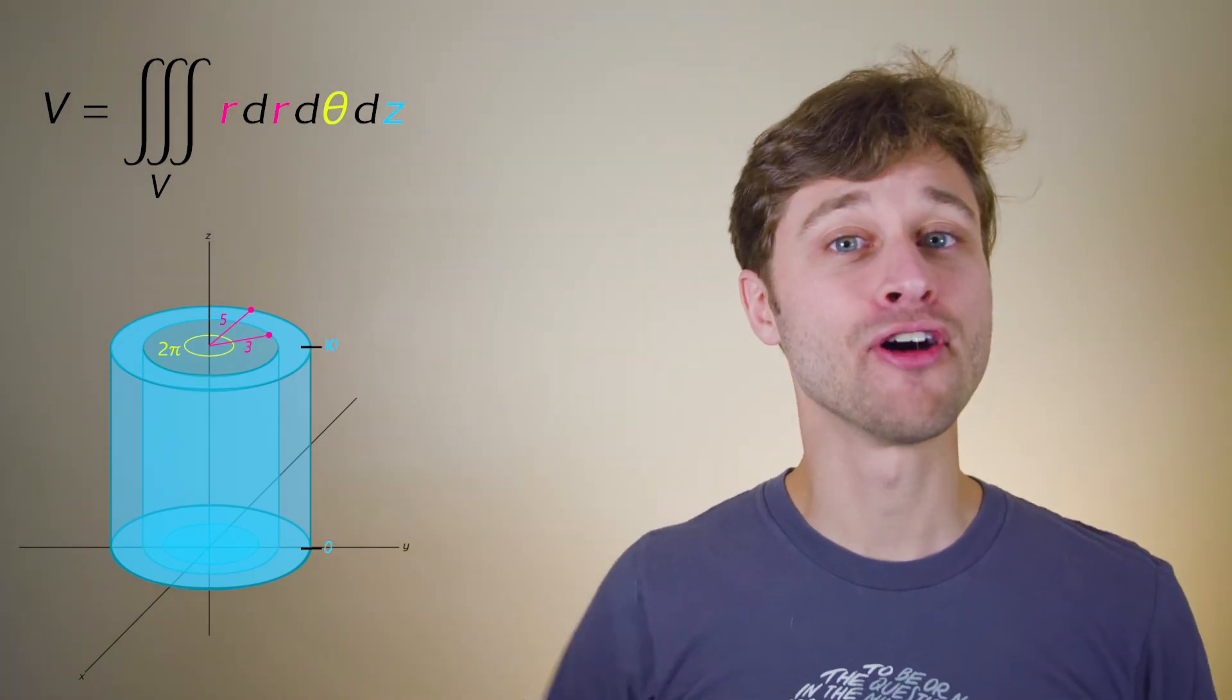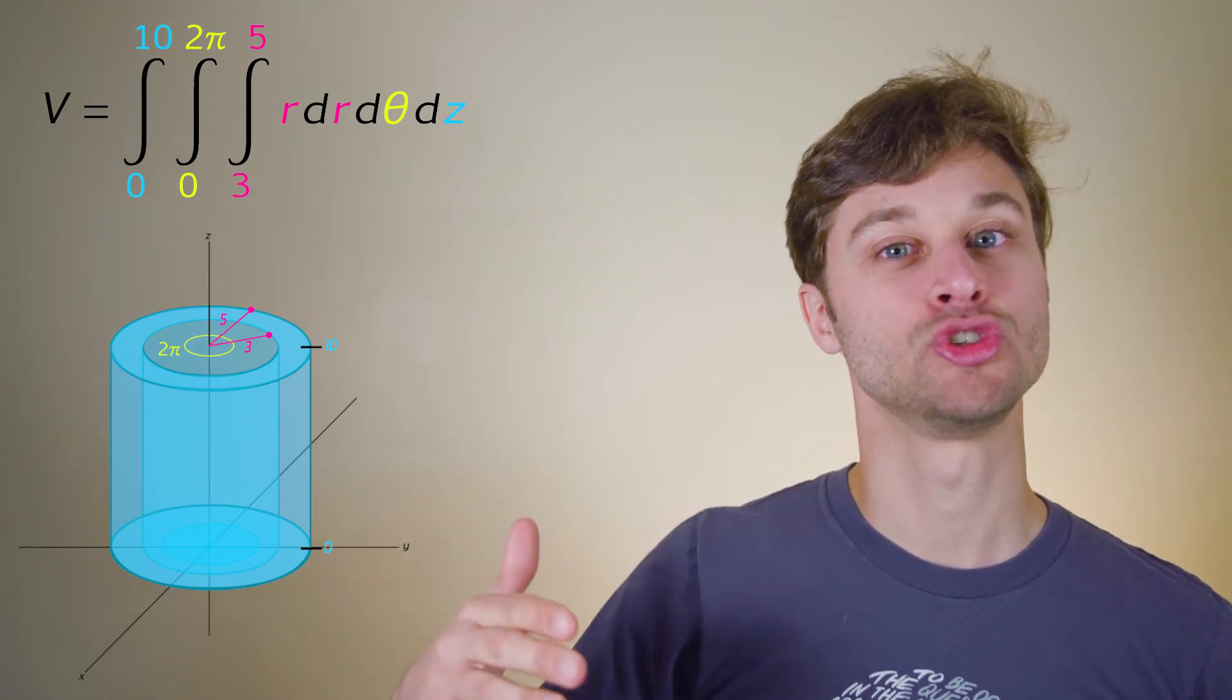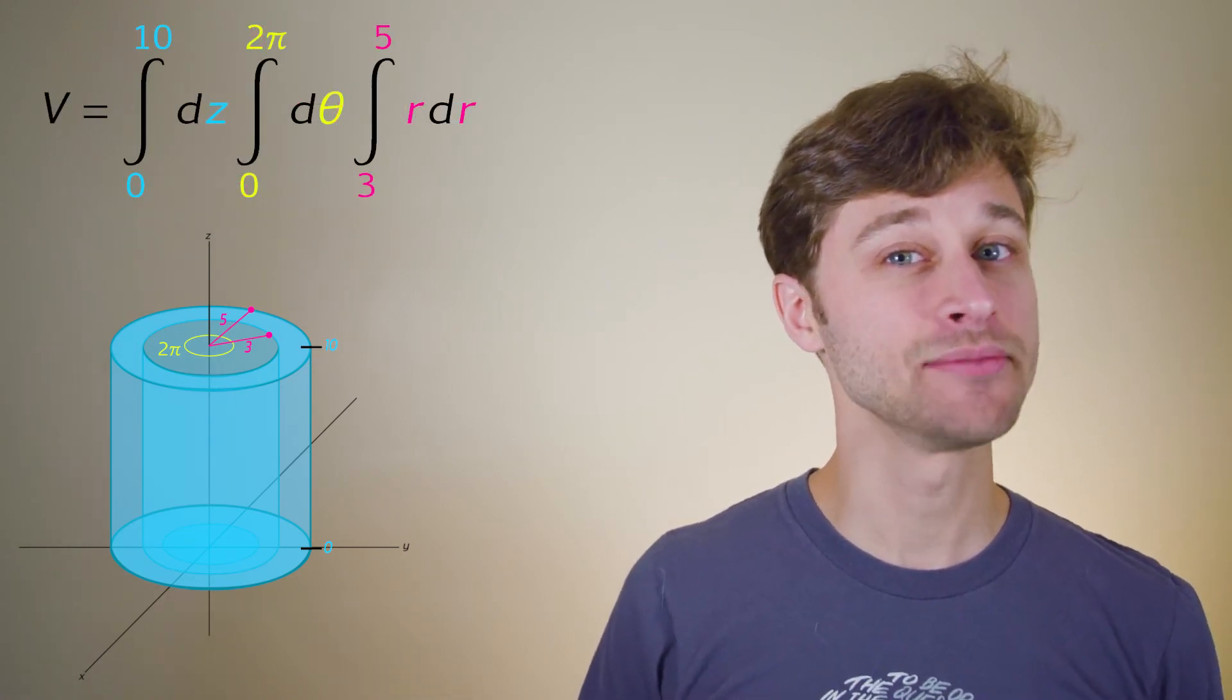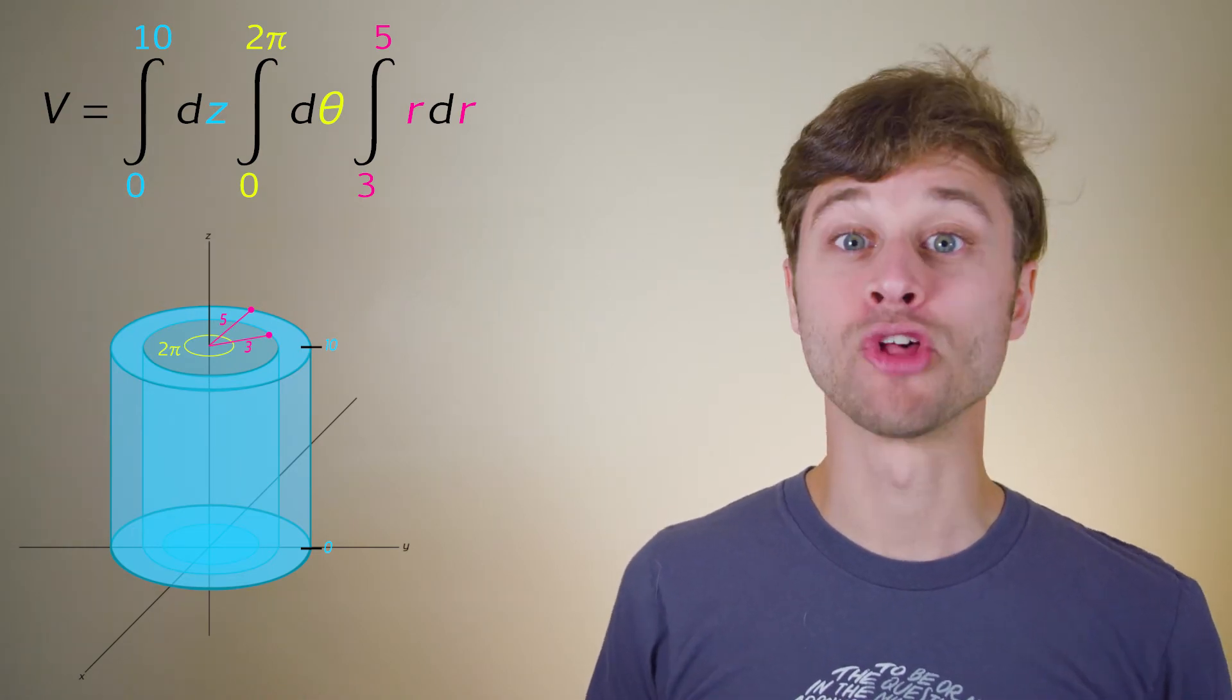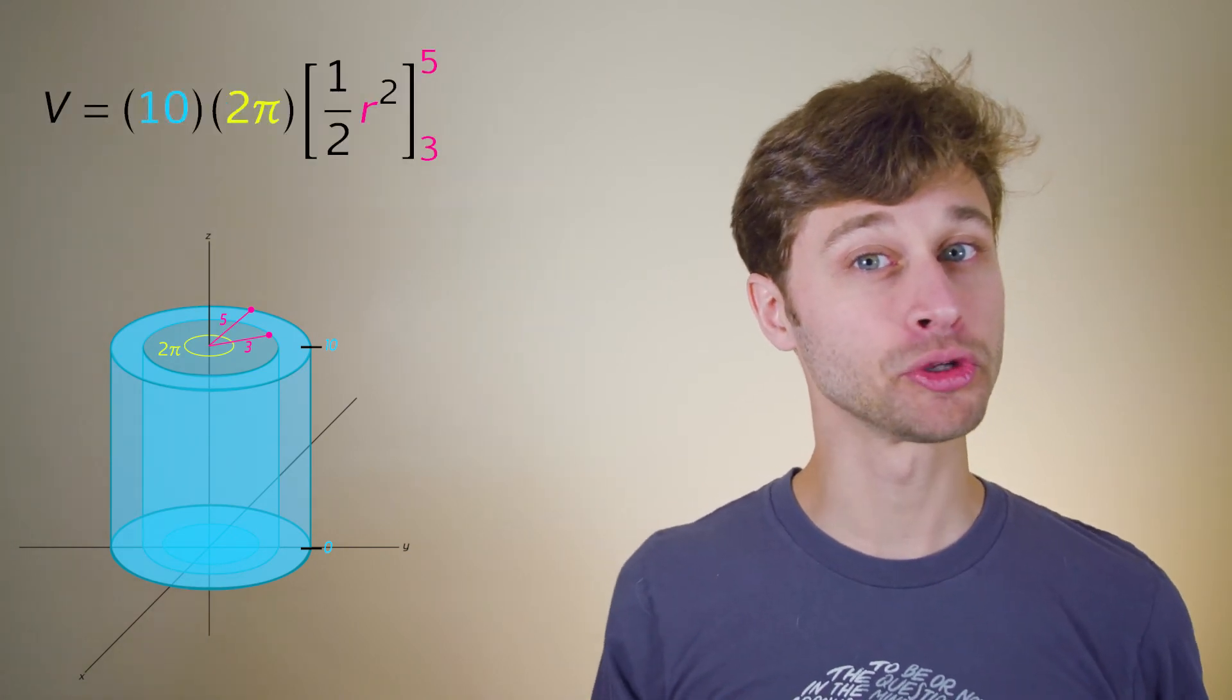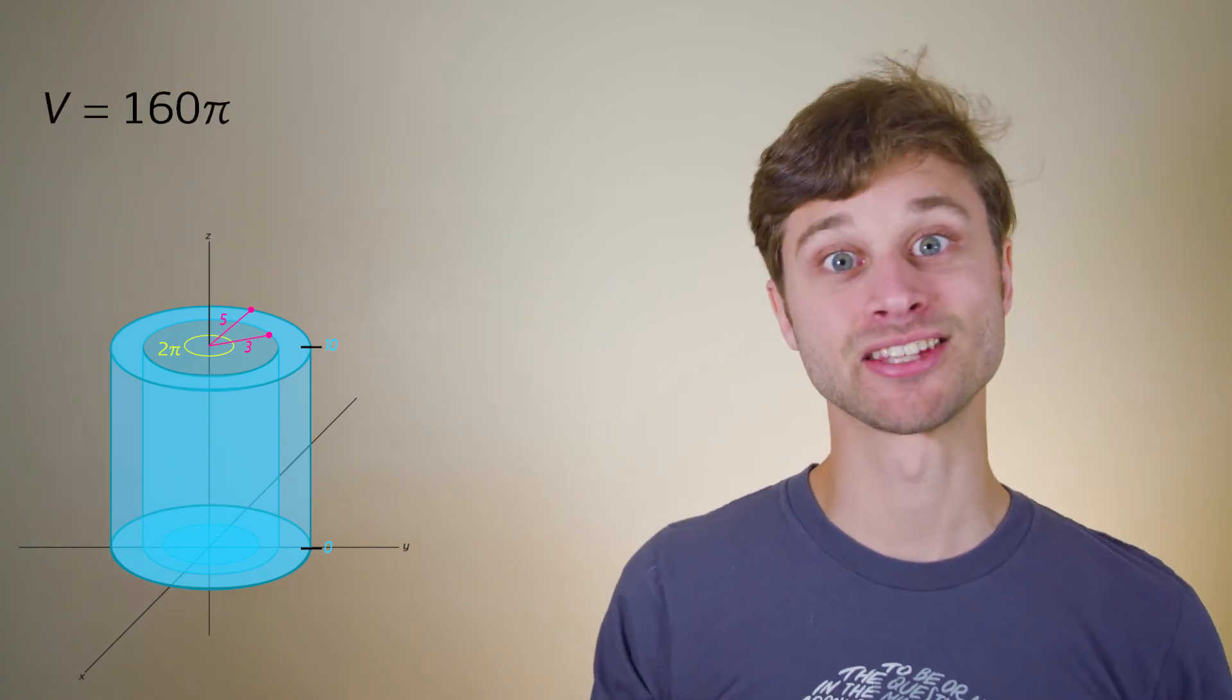Okay, so now we are ready to integrate. Volume is equal to the triple integral here. Now fortunately, because the variables within this triple integral are separable, that means that we can make this into 3 single integrals that are multiplied together. Now I'm left with v is equal to the integral from 0 to 10 dz times the integral from 0 to 2 pi d theta times the integral from 3 to 5 r dr. All these integrals are pretty straightforward to do. The only one we really need to do any work on is the r integral. The z integral becomes 10, the theta integral becomes 2 pi, and the r integral becomes this, which then reduces down to 8. Multiplying these three integrals together, I get 160 pi. And that's the volume of our cylindrical sheath.